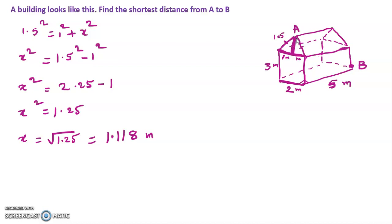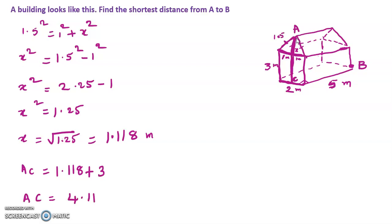Now we have to find this length. We already know that the line from this part to this part is parallel to this line and it is 3 meters, so this is also 3 meters. Let us assume this point is C. Now AC = x plus whatever this length is, so AC = 1.118 + 3 = 4.118 meters.